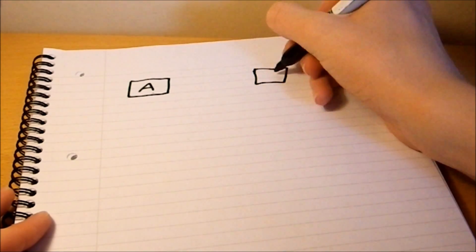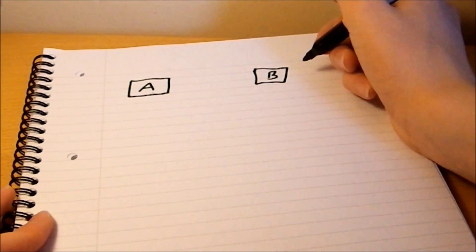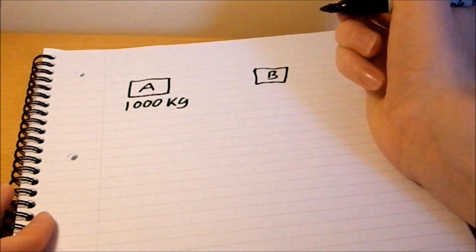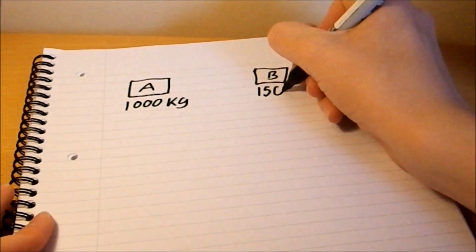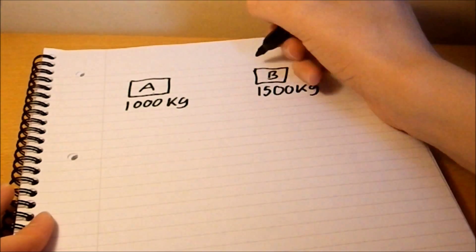Okay, so there's two cars on the road. There's car A here, and car B. Car A has a mass of 1,000 kilograms, car B has a mass of 1,500 kilograms.